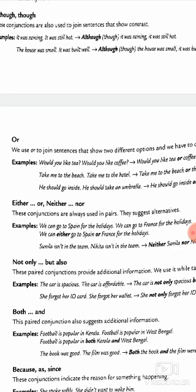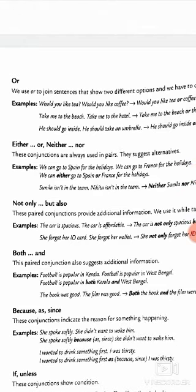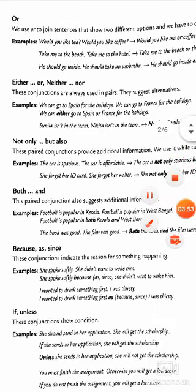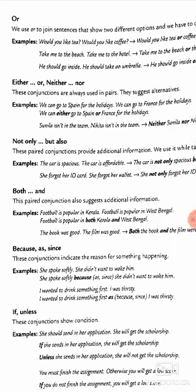Either...or and neither...nor. These conjunctions are always used in pairs. We can go to either Spain or France for holidays. These paired conjunctions are used to show choices between options.